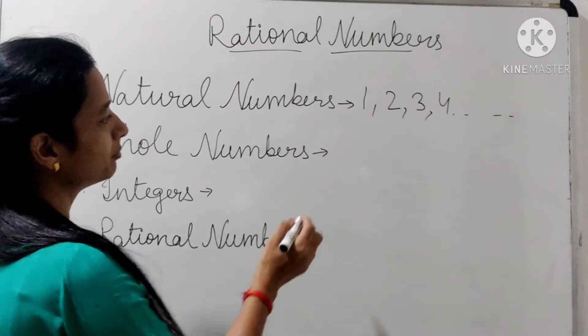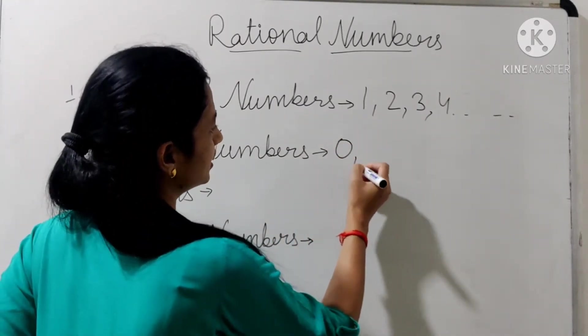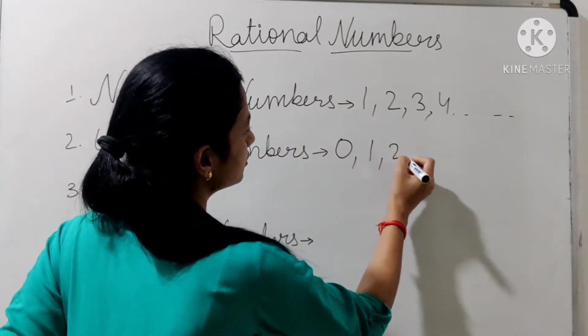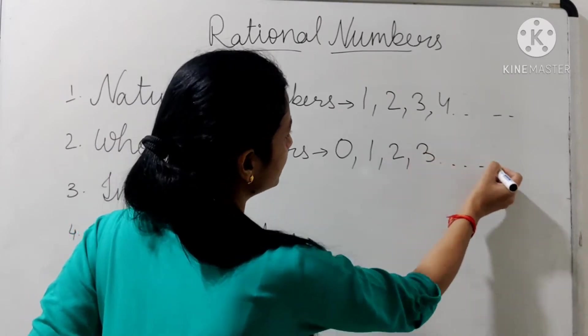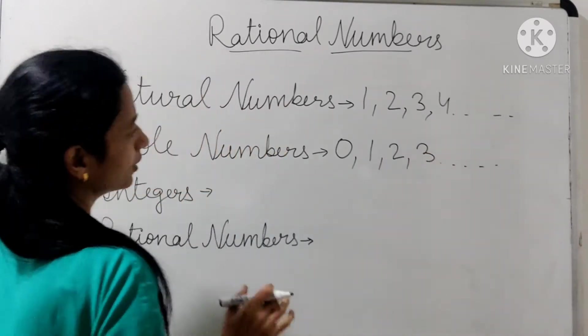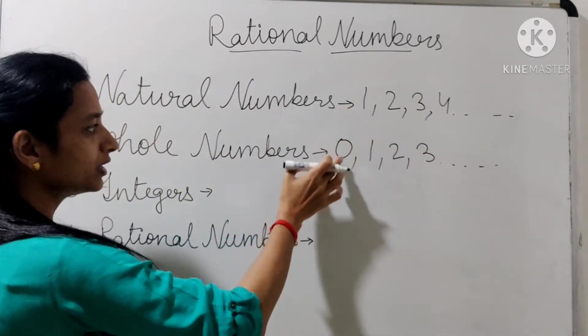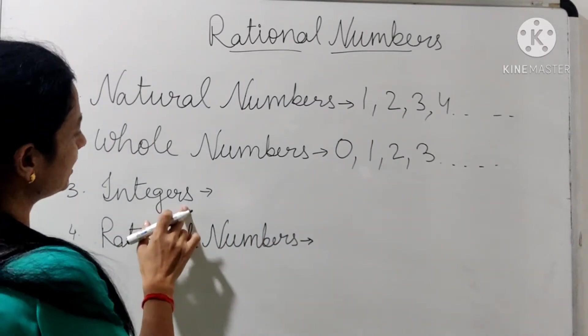Next, whole numbers. Whole numbers हमारे 0 से start होते हैं — 0, 1, 2, 3 and so on. Natural numbers 1 से start होते हैं, whole numbers हमारे 0 से start होते हैं.